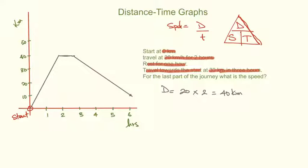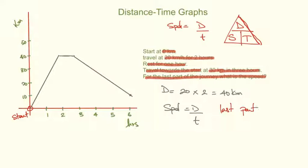And this is the finished product of the graph. Now let's do the last bit — the question asks what is the speed for the last part of the journey. Speed is distance over time. The distance traveled started on 40 and ended on 10, so it's 30 kilometers. The time taken was 3 hours. So we divide 30 by 3, which gives us 10 kilometers per hour. And that's it. Now let's have a look at another problem.